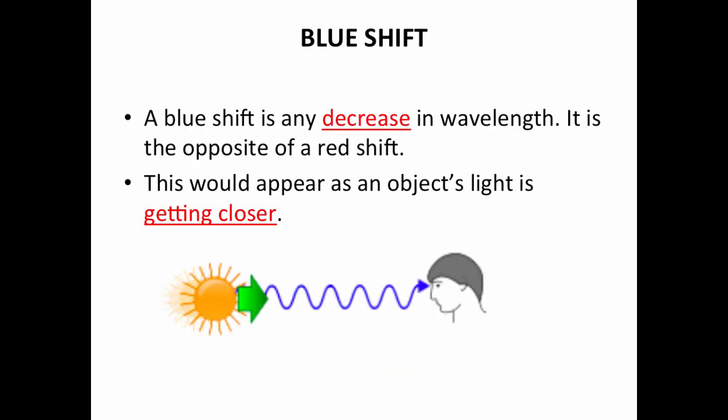A blueshift is the exact opposite. A blueshift is any decrease in wavelength on the opposite side of the redshift. That means it looks like an object's light is getting closer to us. When scientists are looking out in space and they see an object shifting to blue, that object is moving towards us,